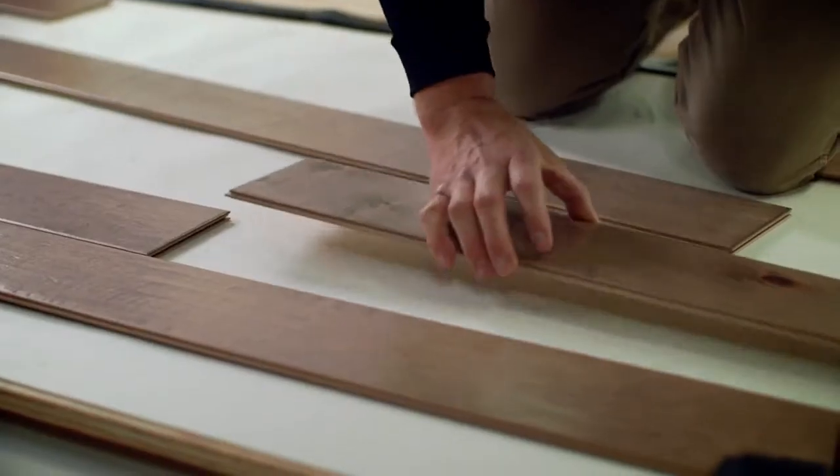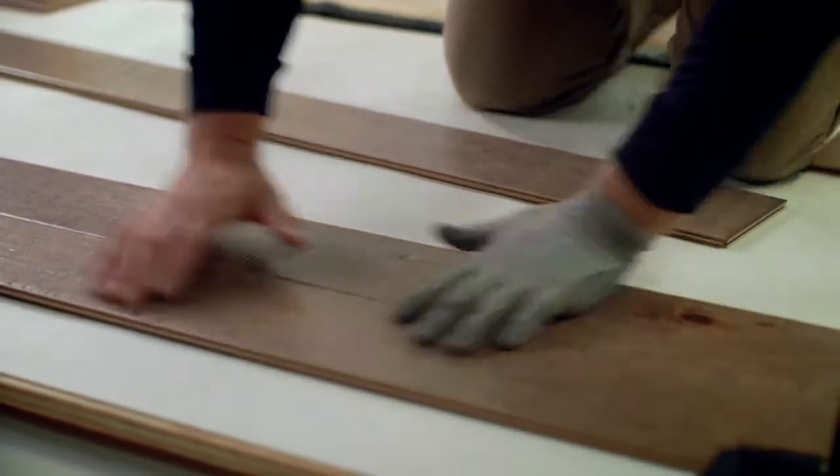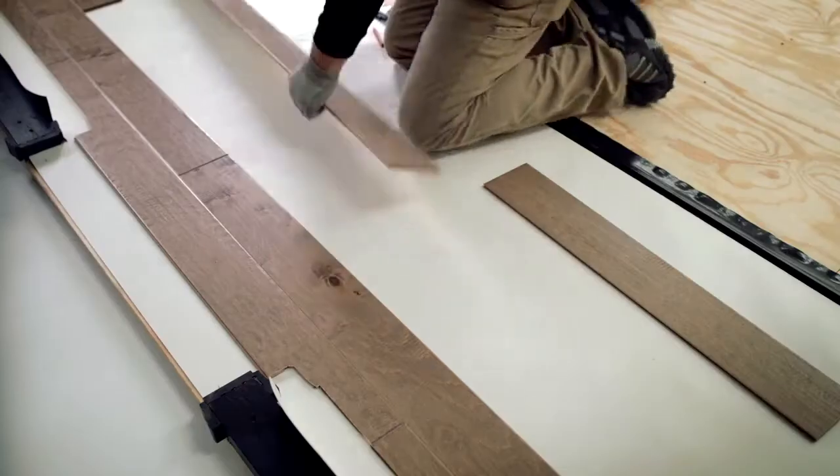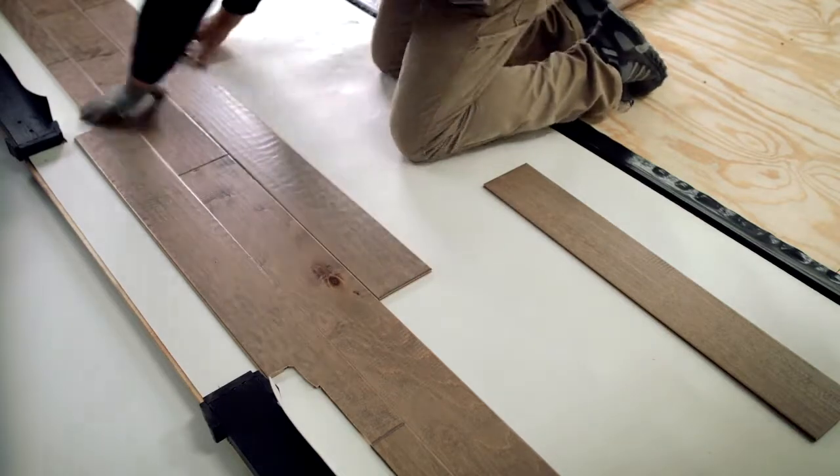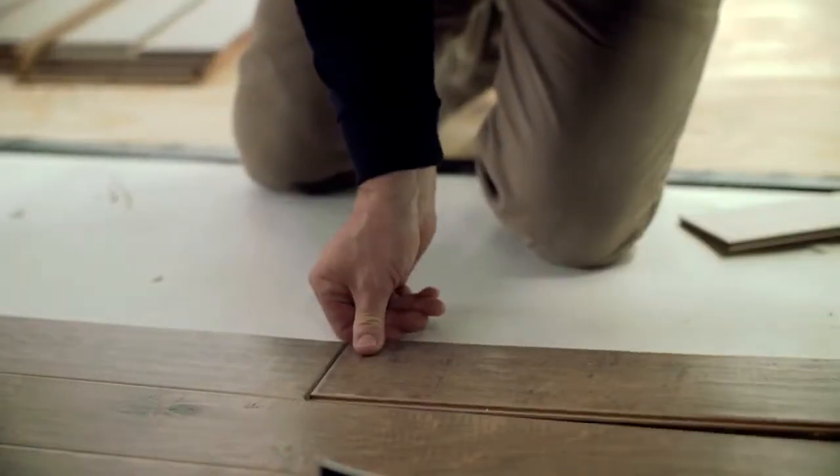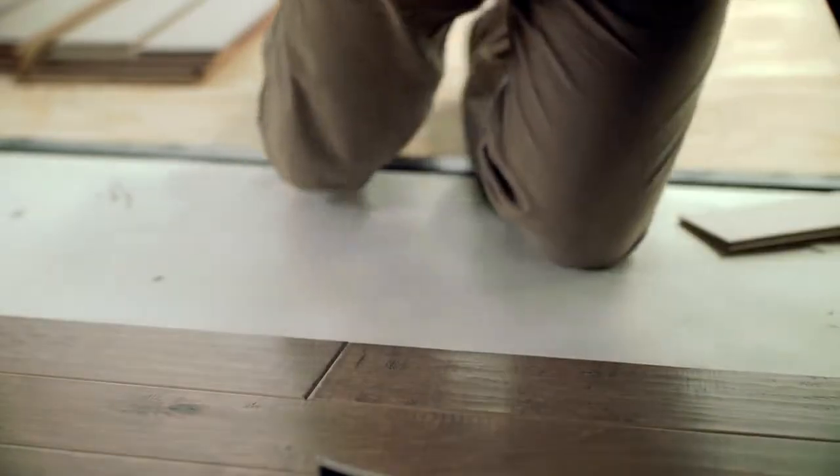So at this point you have your first row in place. Now you'll add the second row plank by plank, again from right to left. Connect the planks using the tongue of the first row and the groove of the second row. Cut the length of the last plank as needed. Step back and have a look.